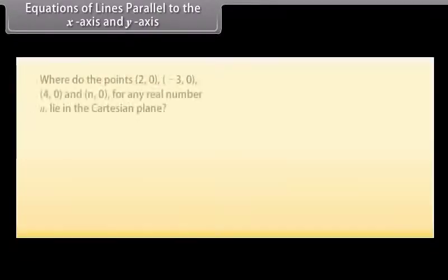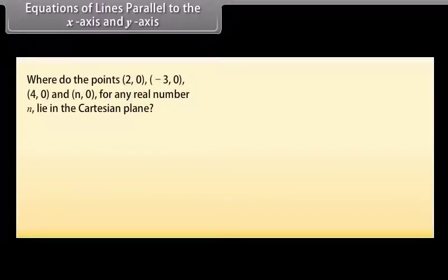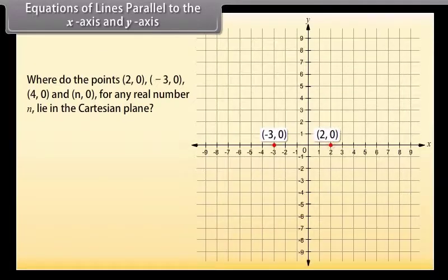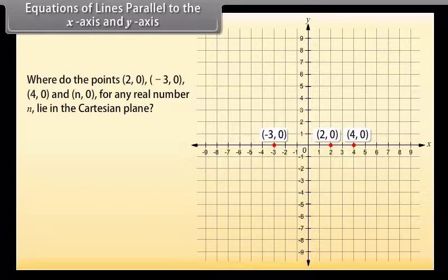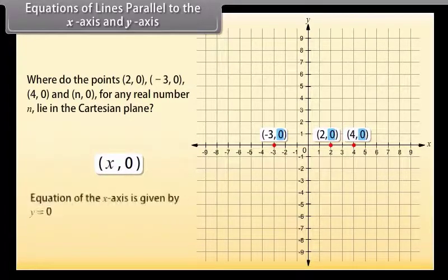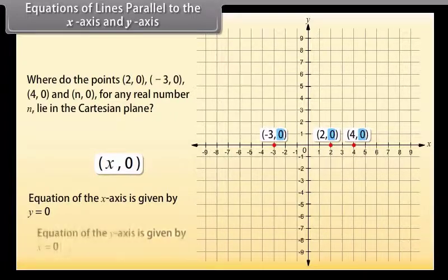Answer one question: where do the points (2, 0), (minus 3, 0), (4, 0), and (n, 0) for any real number n lie in the Cartesian plane? Yes, they all lie on the x-axis — because on the x-axis the y-coordinate of each point is 0. Every point on the x-axis is of the form (x, 0). So the equation of the x-axis is given by Y equals 0. Similarly, the equation of the y-axis is given by X equals 0.